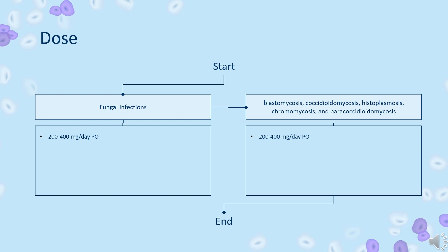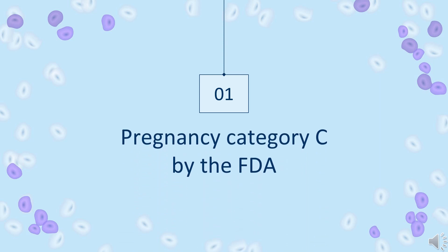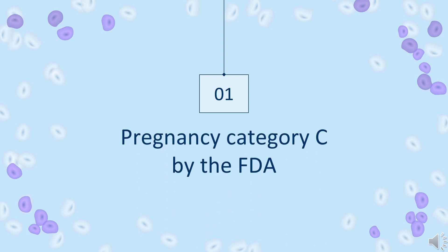Dose — Fungal Infections: Indicated for the treatment of the following systemic fungal infections in patients who have failed or who are intolerant to other therapies: blastomycosis, coccidioidomycosis, histoplasmosis, chromomycosis, and paracoccidioidomycosis. Dosage: 200–400 mg orally per day. Safety Advice: Ketoconazole is a pregnancy category C drug in the FDA system. Its major risk is feminization of the male fetus when used by the mother early in pregnancy.